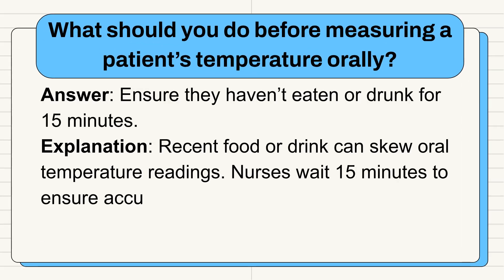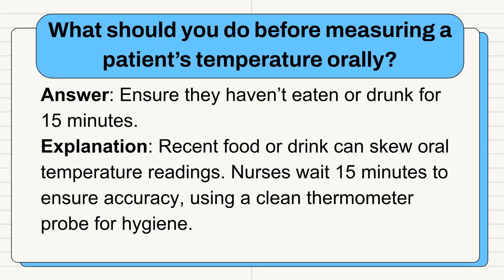Question 9: What should you do before measuring a patient's temperature orally? Answer: Ensure they haven't eaten or drunk for 15 minutes. Recent food or drink can skew oral temperature readings. Nurses wait 15 minutes to ensure accuracy, using a clean thermometer probe for hygiene.